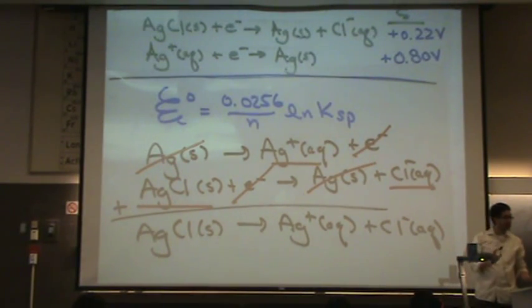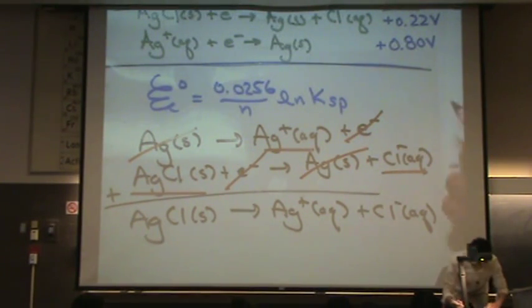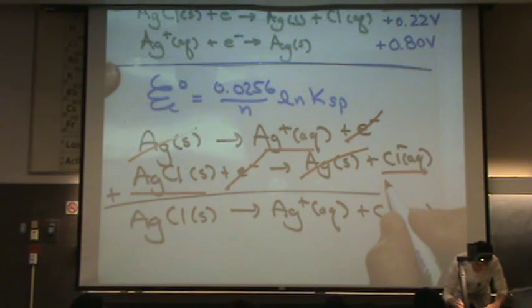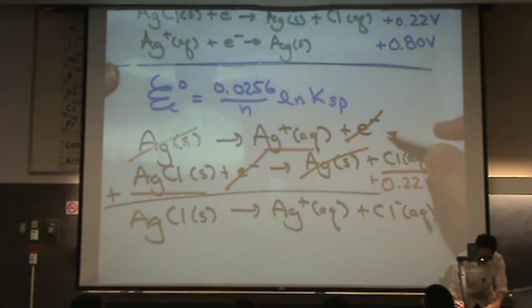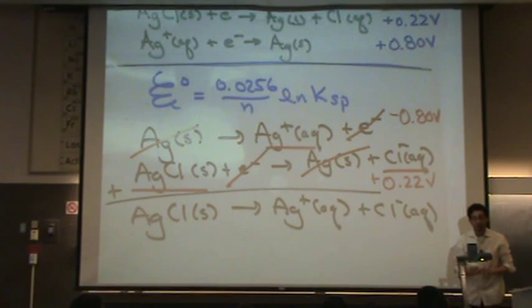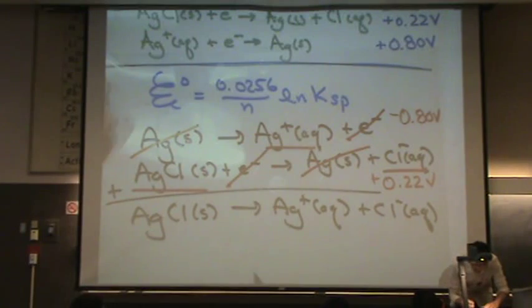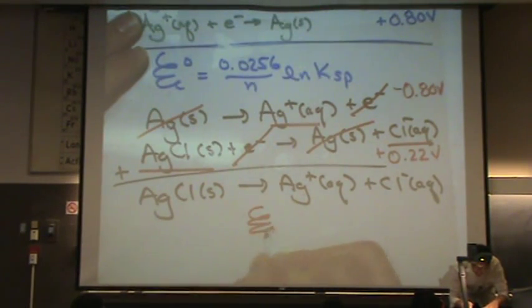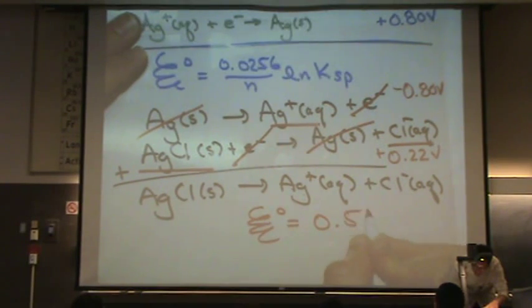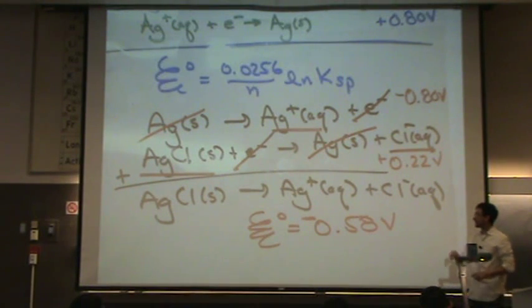Now, I know some of you are extremely bothered by that because note what happened. And I'll write this in red. This reaction here at the bottom kept its 0.22 volts positive. But the reaction I wrote here with the silver solid, it just reversed. And why is that annoying to us? Yeah, I'm going to get an overall negative number. And that's going to be, so my E standard for this reaction is going to be 0.58 volts. And that's going to be a negative number.